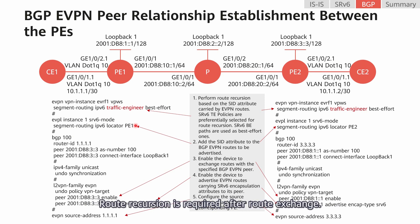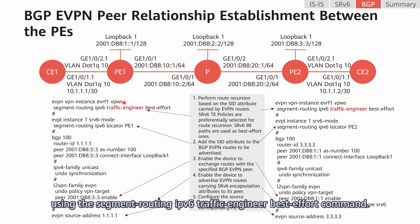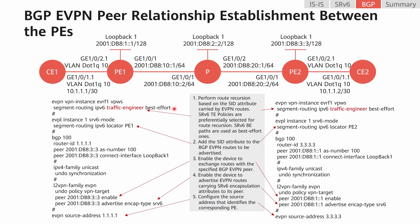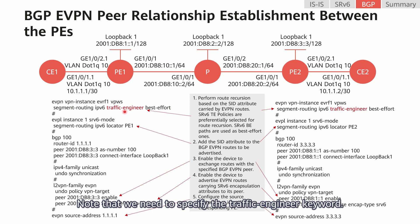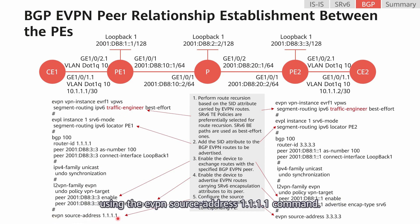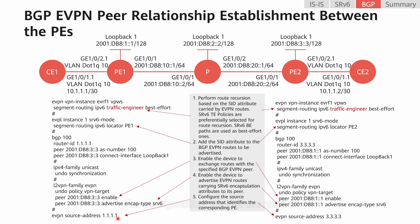Route recursion is required after route exchange. Route recursion is configured in an EVPL VPWS instance using the segment-routing IPv6 traffic-engineer best-effort command. Note that we need to specify the traffic-engineer keyword. In addition, we need to configure an EVPN source address using the evpn source-address 1.1.1.1 command. This configuration is very important. The configurations on P2 are similar.